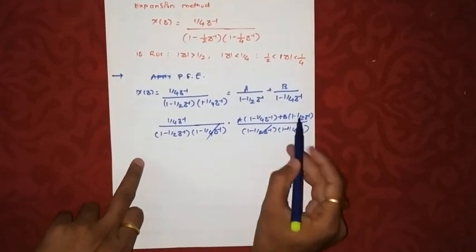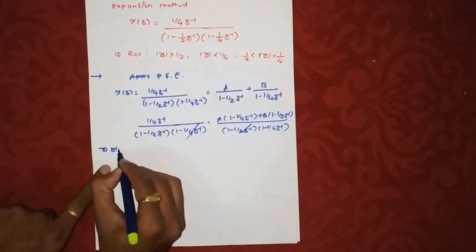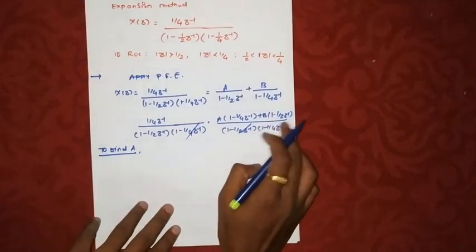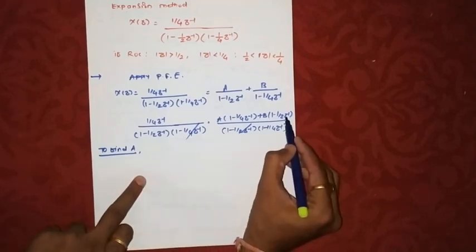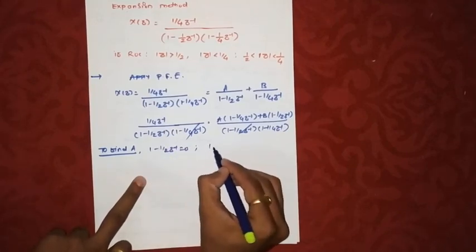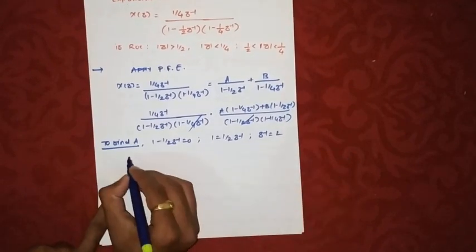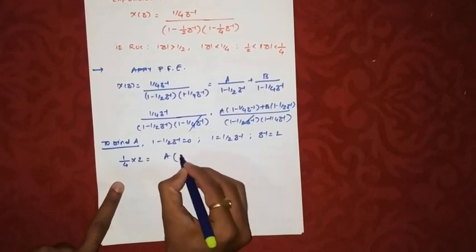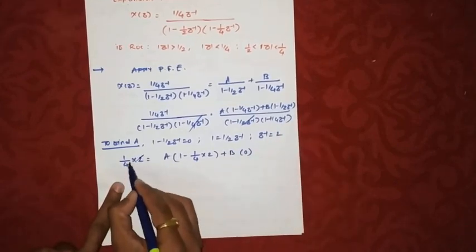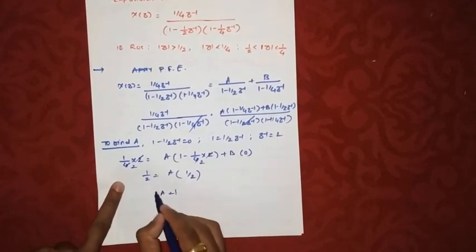To find A, B must be zero, which happens when (1 − (1/2)z⁻¹) = 0, giving z⁻¹ = 2. Substituting z⁻¹ = 2 into the equation: (1/4)(2) = A·(1/4)(2) + B·0, so 1/2 = A·(1/2). Therefore A = 1.